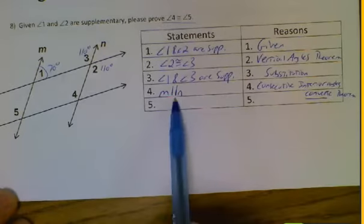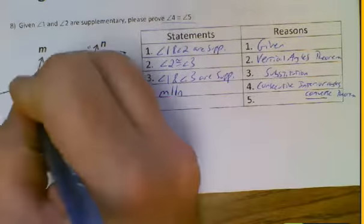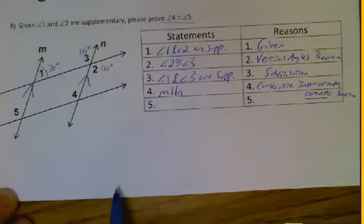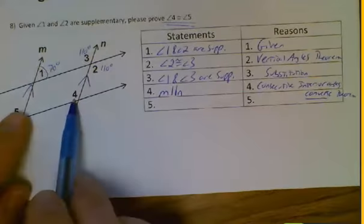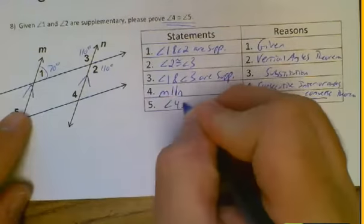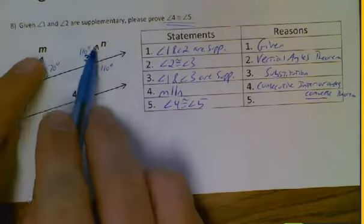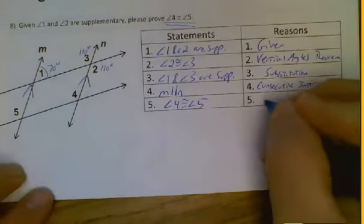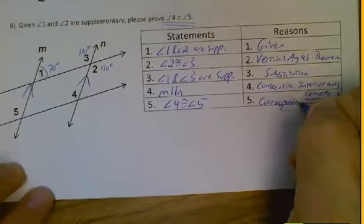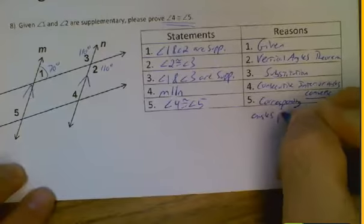Now that we've got M and N parallel, right, M is now parallel to N. We've proven it, okay? We can go one extra step here and say that angles 4 and 5 must be congruent because these are corresponding, and all corresponding angles, when lines are parallel, must be congruent. That's the corresponding angles postulate.